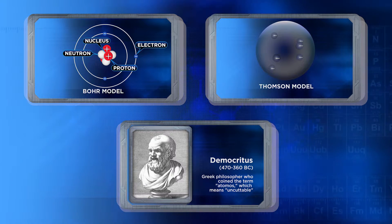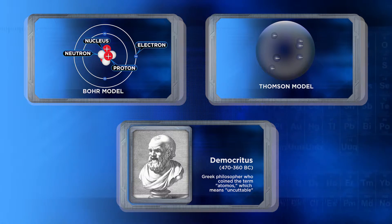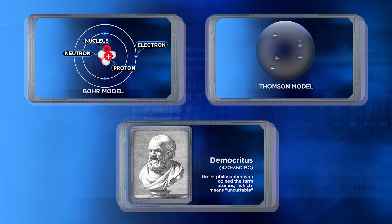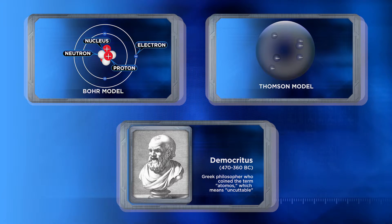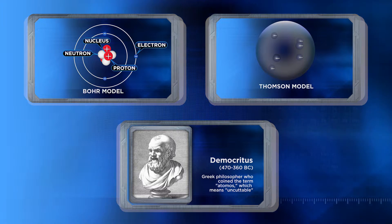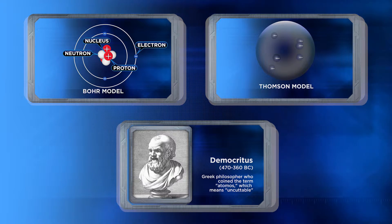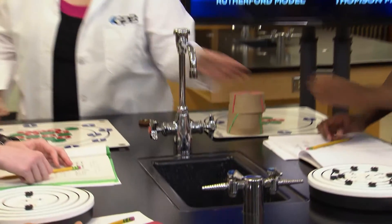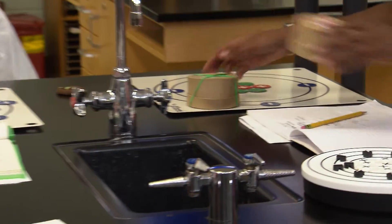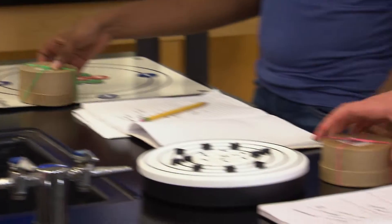Since we have no way of easily viewing actual atoms, we must use conceptual, mathematical, and physical models of atoms to understand how they behave. We even used a cardboard box as an atomic model.